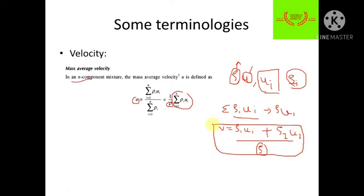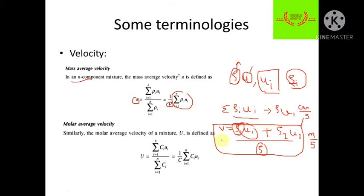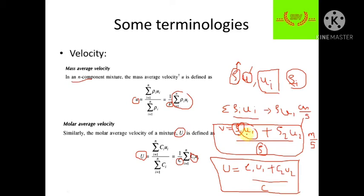The unit of mass average velocity is in general meter per second, but for diffusion we calculate it in centimeter per second. Next is molar average velocity, defined as capital U. In place of density we place concentration, so the same formula for a binary mixture gives: U = (c_1 * u_1 + c_2 * u_2) divided by C, where u_1 and u_2 are the velocities of components 1 and 2, and c_1 and c_2 are their molar concentrations in solution.